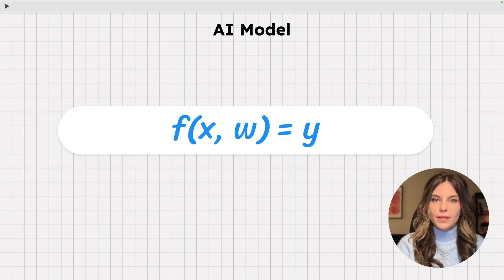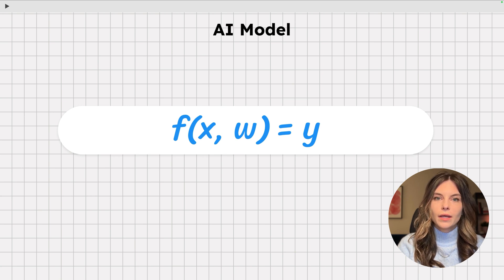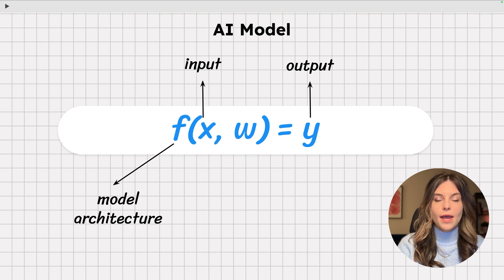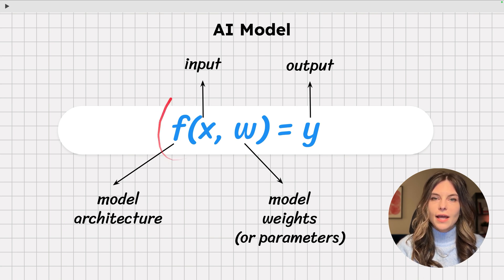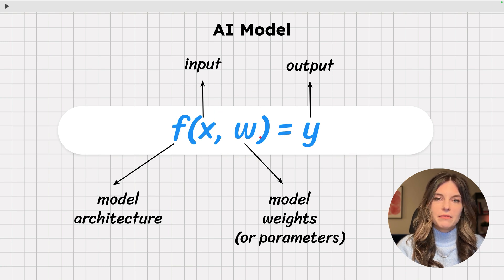Here's a general framework that will help us establish terminology. You can think of an AI model as a function f of x and w with value y, where x is the input, y is the output, f is the model architecture, and w are the model weights or the model parameters. So f is an algorithm that transforms x with the help of w, much like a mathematical function or a computer program.